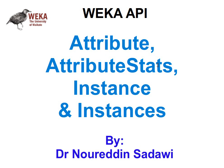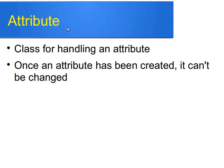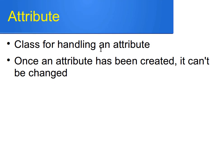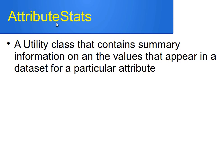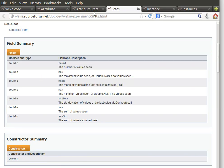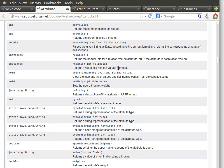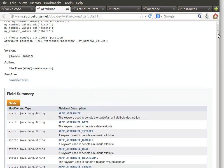The classes are Attribute, AttributeStats, and Instances, and the interface is Instance. The Attribute class is for handling an attribute — as the name suggests, once the attribute has been created it can't be changed. You can create your own attributes using this class, although I'll just be reading them from an existing dataset. AttributeStats is a utility class that contains summary information on the values that can appear in a dataset for a particular attribute.